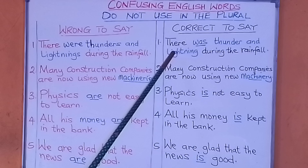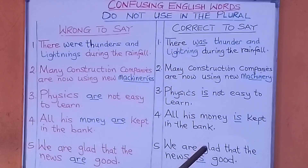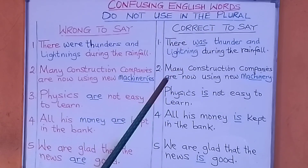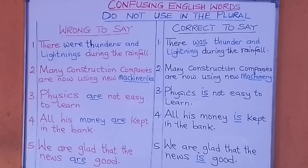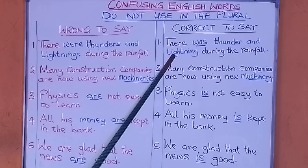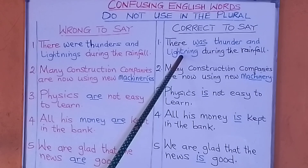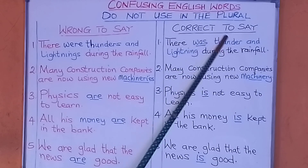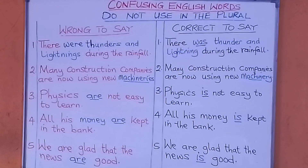Thunder and lightning remain thunder and lightning. We do not use them in the plural form. However, when only one thing is meant, you can say 'a crash of thunder', 'five crashes of thunder', or 'ten crashes of thunder'. You can also say 'a flash of lightning', 'two flashes of lightning', or 'five flashes of lightning'. But thunder and lightning remain the same.